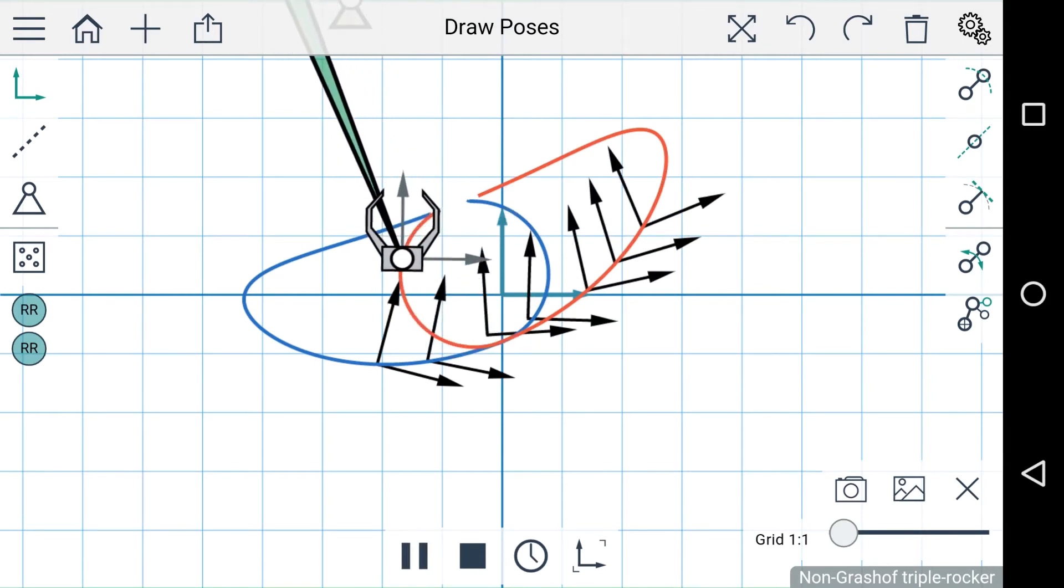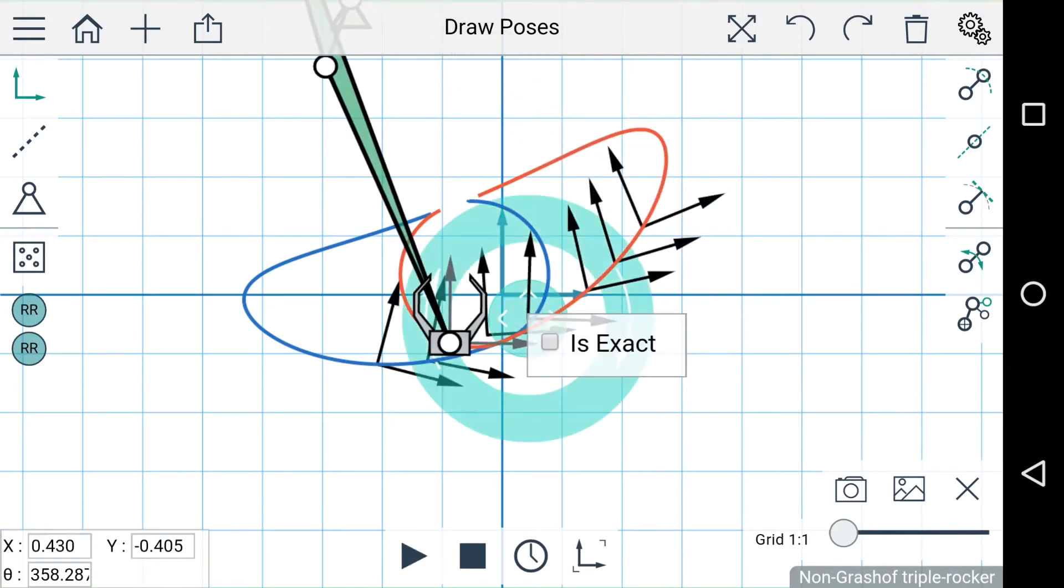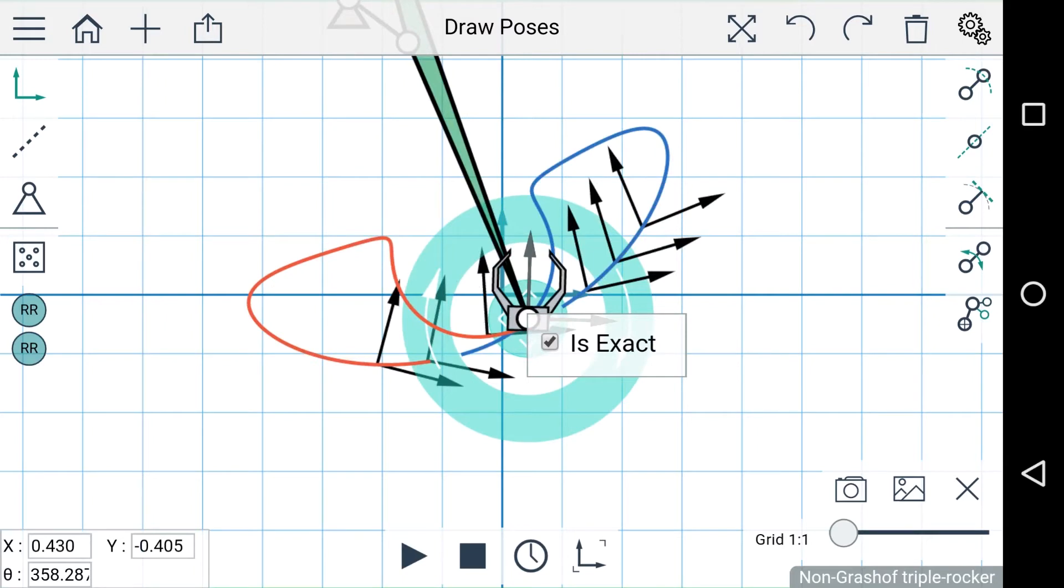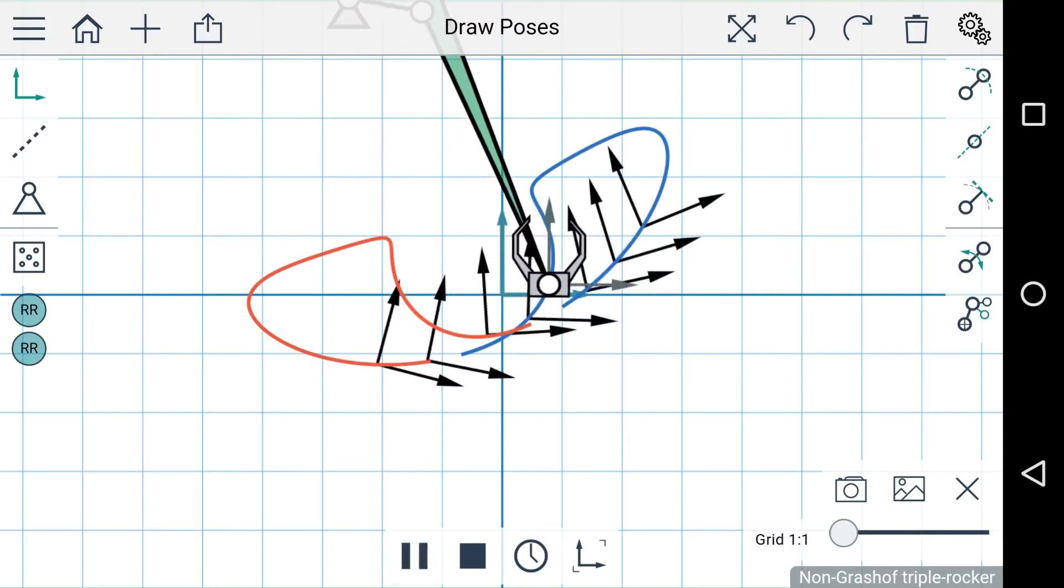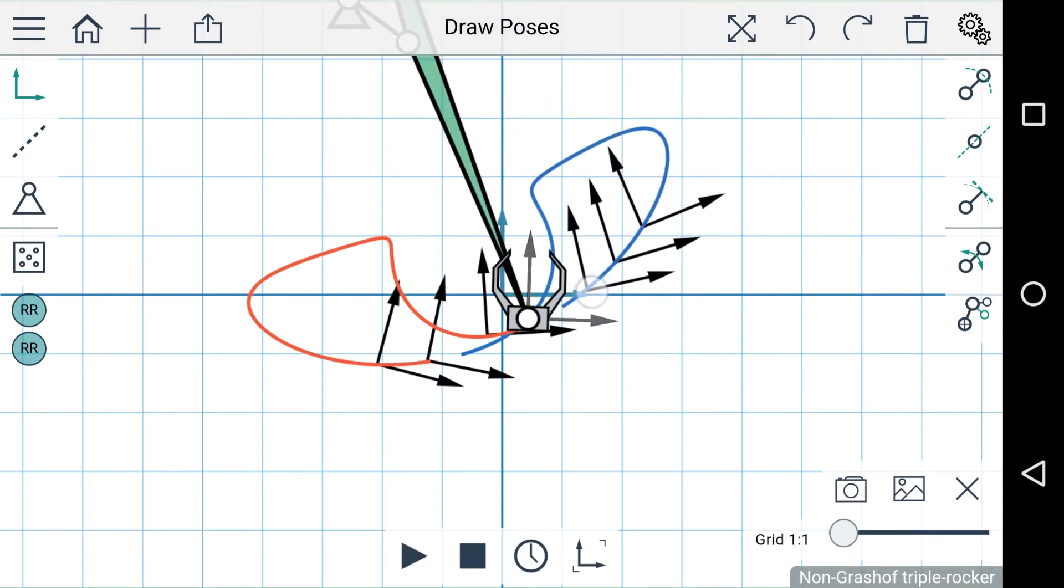If you'd like to select poses that the coupler should pass through exactly, you can double tap a pose and check this box that says is exact. So now the coupler will pass through this pose exactly and approximate the rest. You can select up to five exact poses.